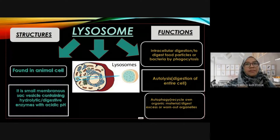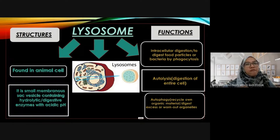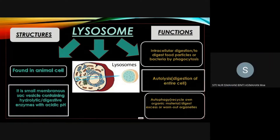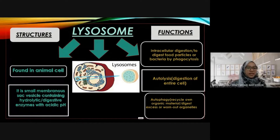Another example: tadpoles have tails, but frogs do not. How does the tail disappear as a tadpole transforms into a frog? Students answer: autolysis. Correct — autolysis digests the entire tail cells, causing the tail to disappear during metamorphosis.